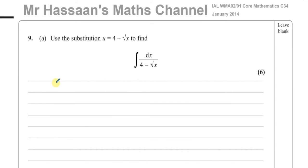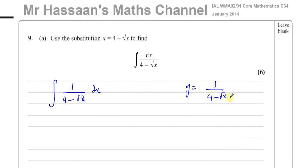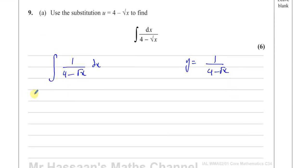So we have to integrate this expression here. I'm going to rewrite this slightly as 1 over 4 minus the square root of x dx. And I'm going to think of y as 1 over 4 minus the square root of x. What we have to do is integrate y with respect to x — that's our objective.